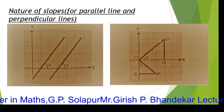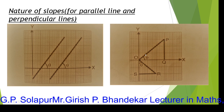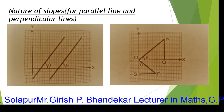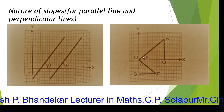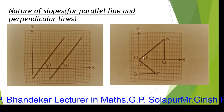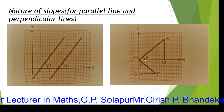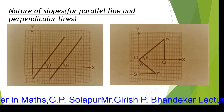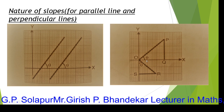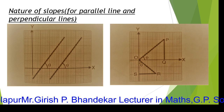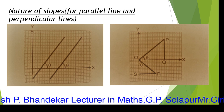Now in the second diagram, OP is one straight line and OR is another straight line. These two straight lines are said to be perpendicular to each other if M1 multiplied by M2 is equal to minus 1 — meaning two lines are perpendicular if the product of their slopes is equal to minus 1.